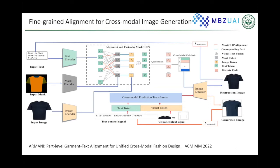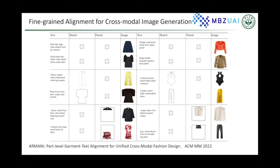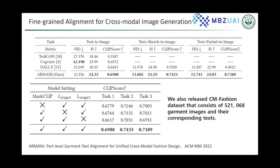In the second stage, the text control signal and the visual control signal are used as inputs to generate a sequence of tokens. Our quantitative image generation results show the model can successfully generate images given text, sketch, and image parts at very high fidelity. We also compare our model with TryOnGAN, and we release a new large-scale fashion dataset containing garment images and their corresponding text.